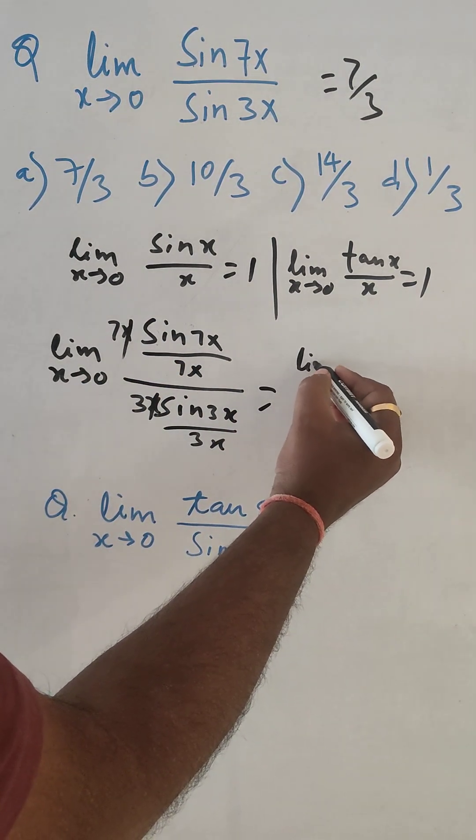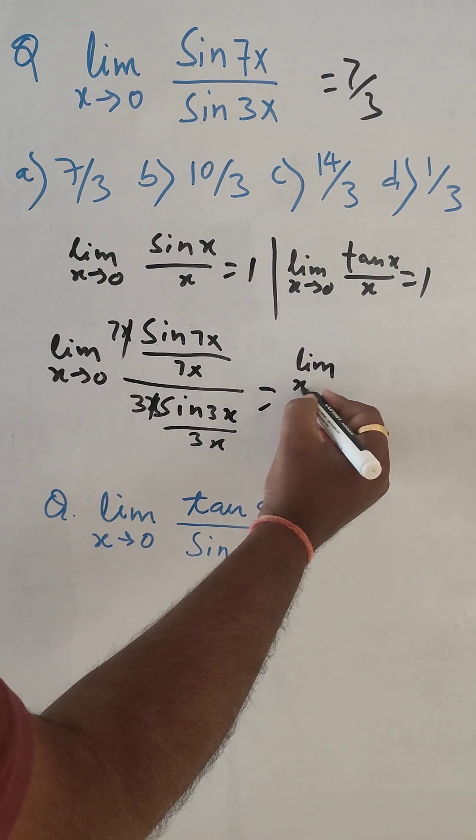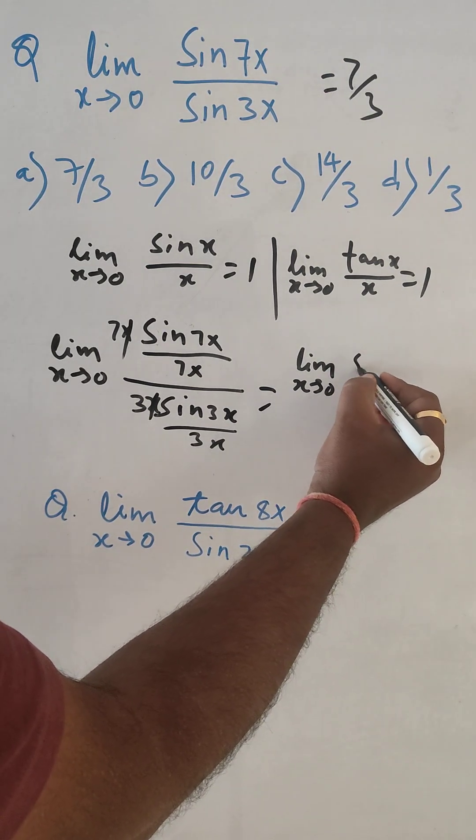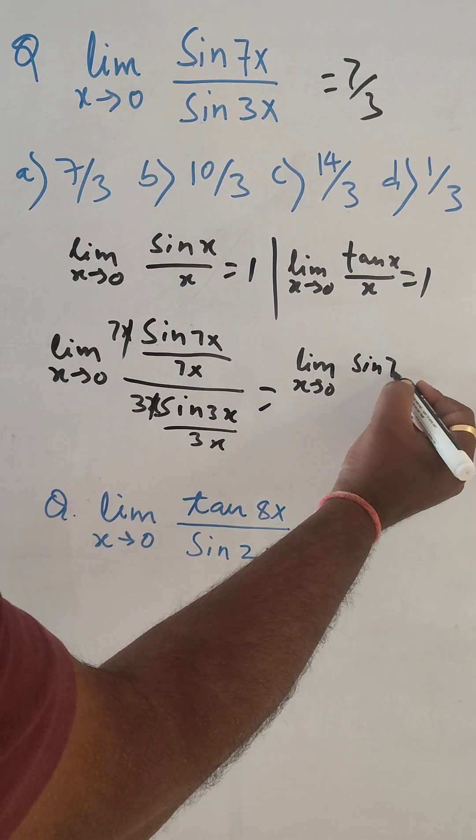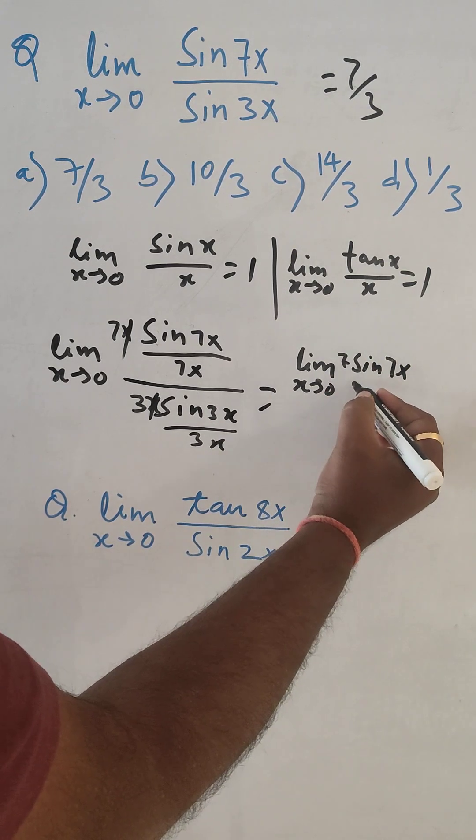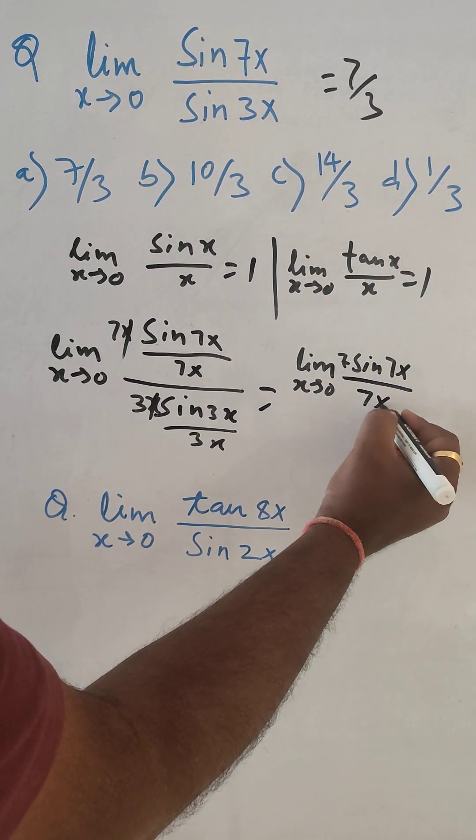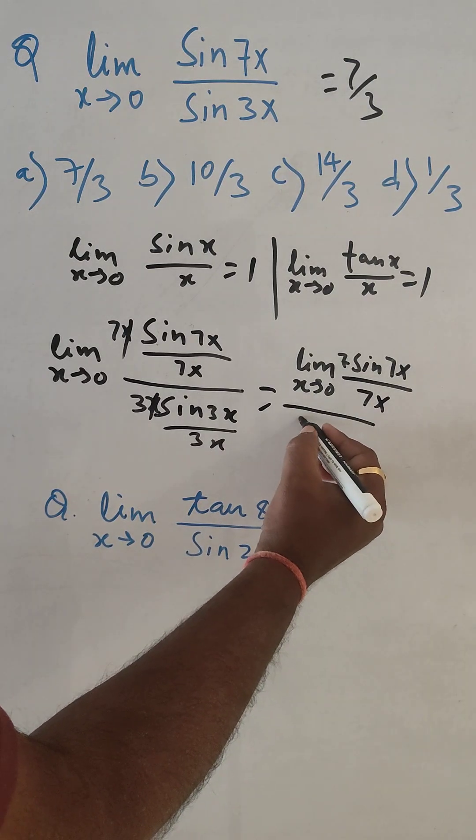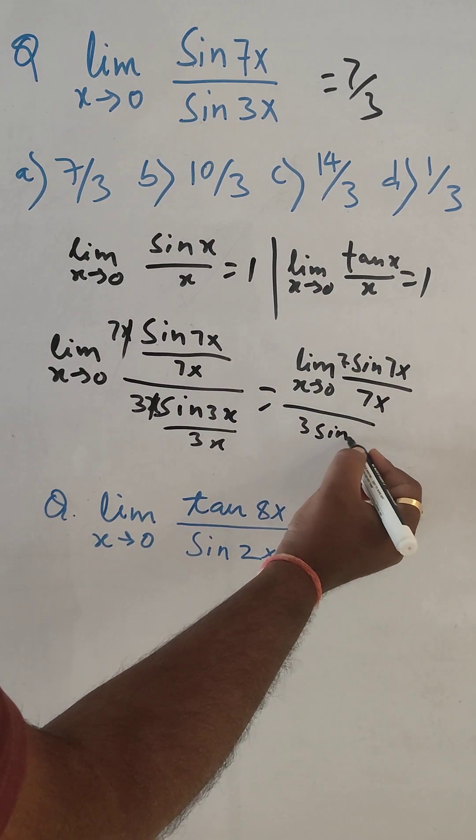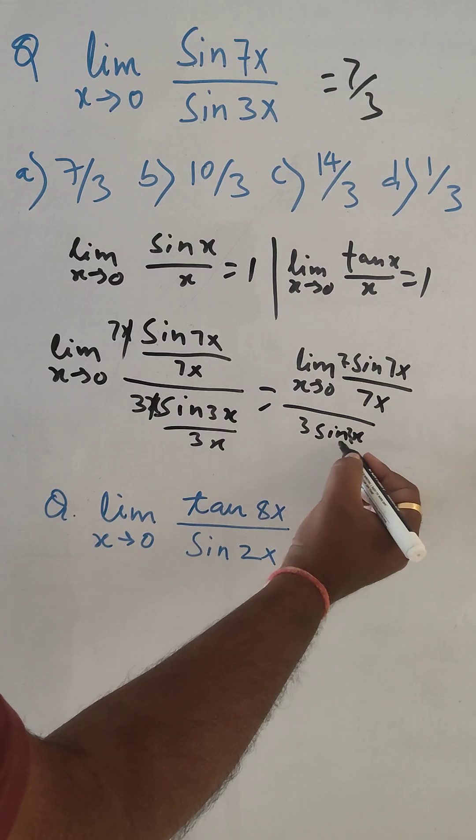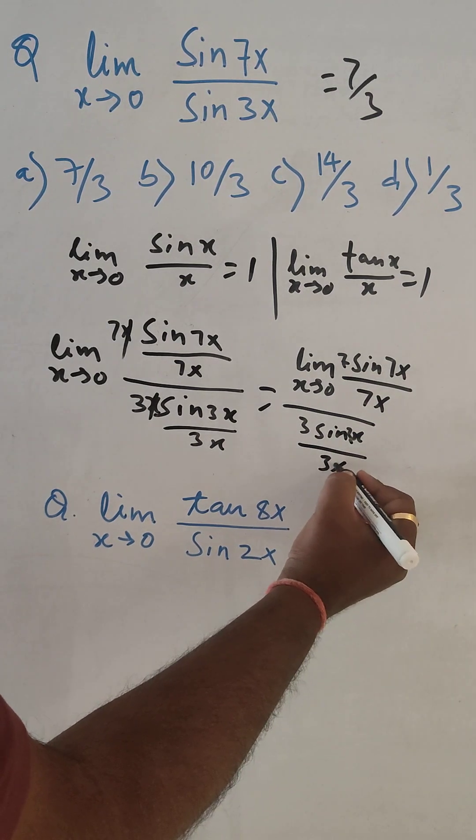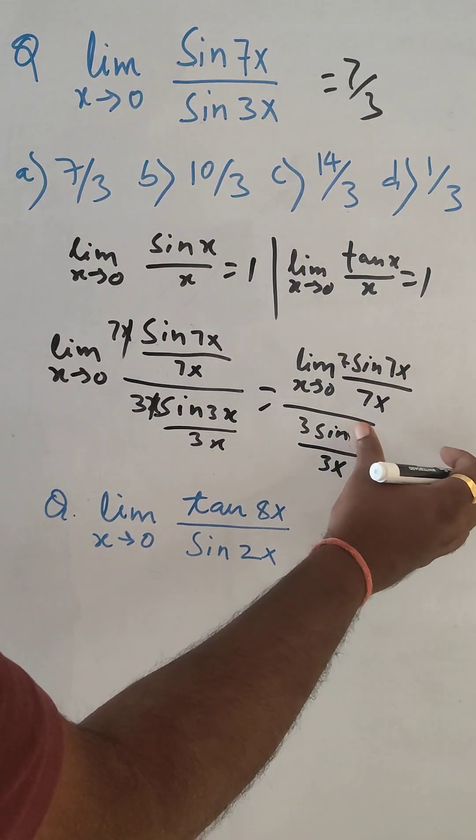I have limit x tends to 0, sin 7x and here 7x. And here 3, sin 3x, and here 3x.